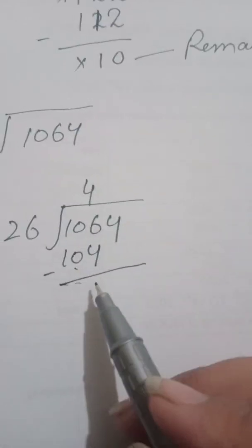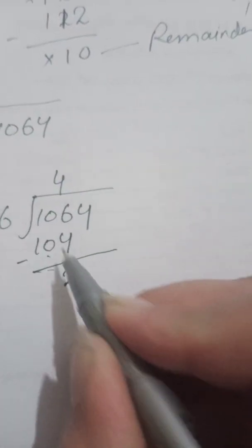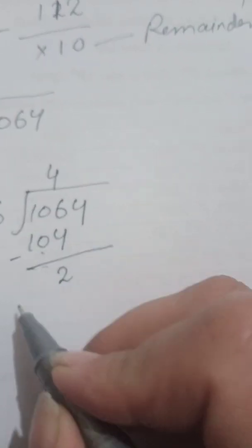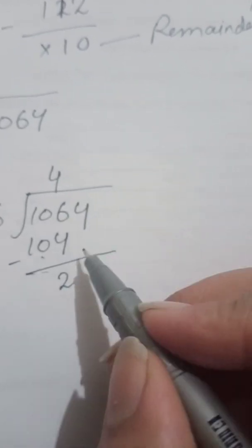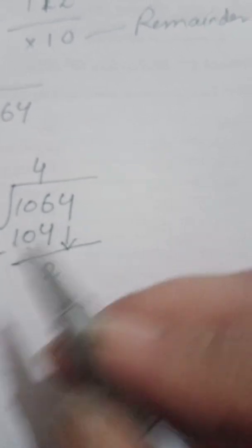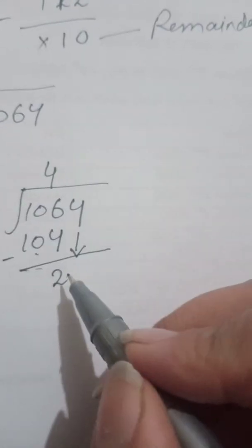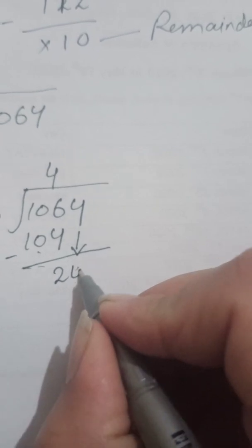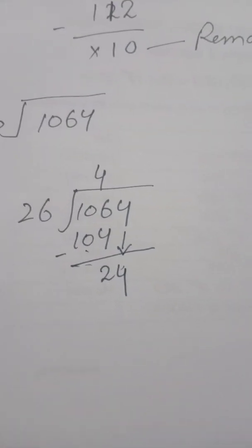The next step is to subtract: 6 minus 4 is 2, 0 minus 0 is 0, 1 minus 1 is 0. You can write zero or leave it — it doesn't matter. The next step is to bring down the next digit, which is 4. Now we have 24.